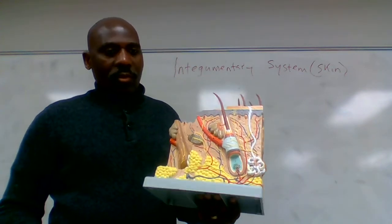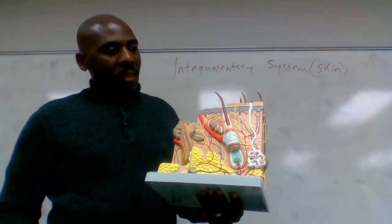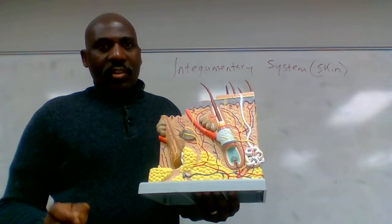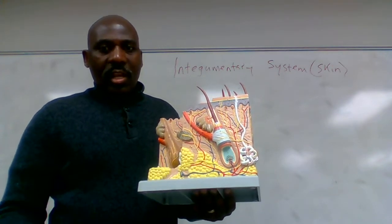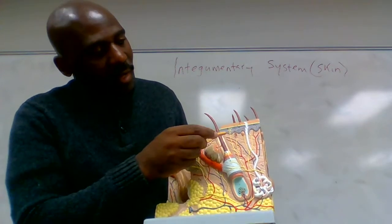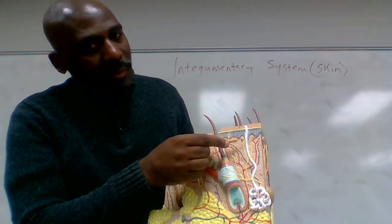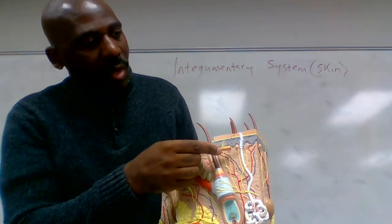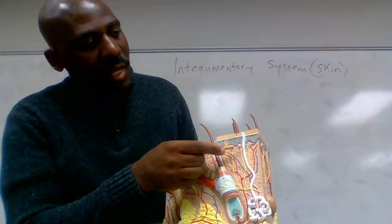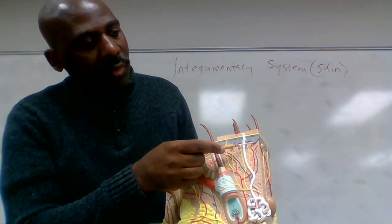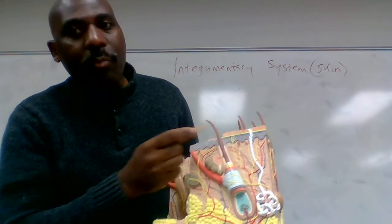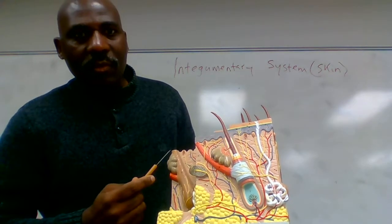Here I have a model of the skin or the integumentary system. The first thing to note is that the skin is divided into three layers. This uppermost layer of the skin, from here to here, is referred to as the epidermis.